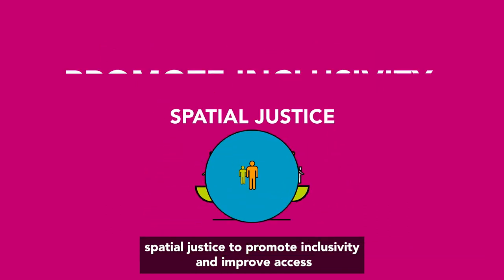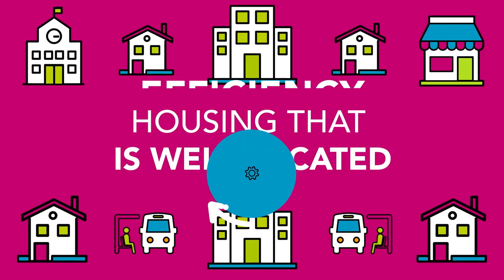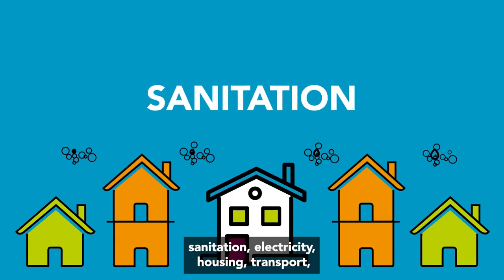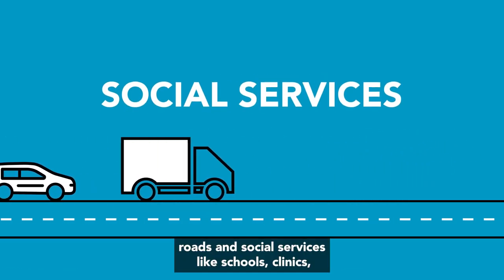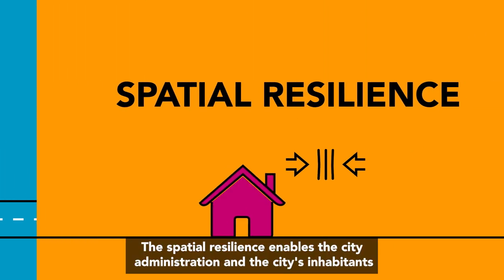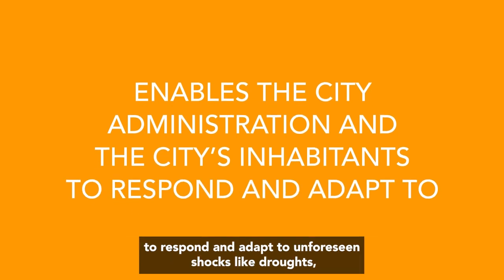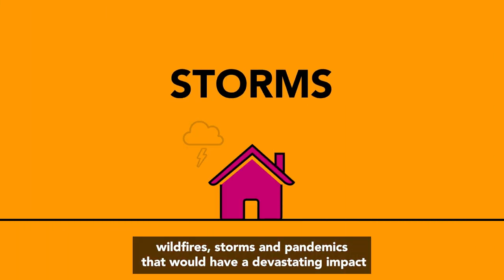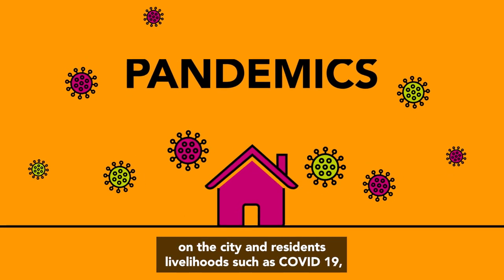We are guided by several key principles and objectives. Spatial justice promotes inclusivity and improves access to economic opportunities and housing that are well located. Efficiency ensures a more compact city, so that providing water, sanitation, electricity, housing, transport, roads and social services like schools, clinics, community centres and so forth are more affordable. Spatial resilience enables the city administration and inhabitants to respond and adapt to unforeseen shocks like droughts, wildfires, storms and pandemics — such as COVID-19 — that would have a devastating impact on the city and residents' livelihoods.